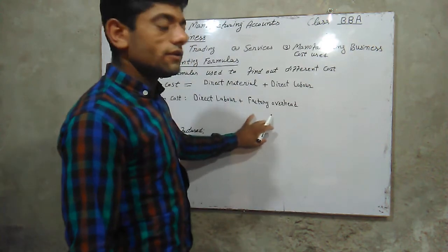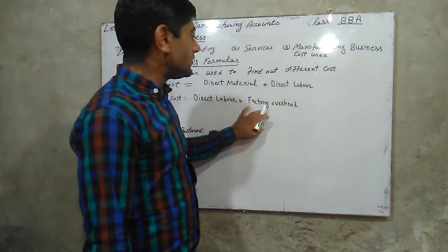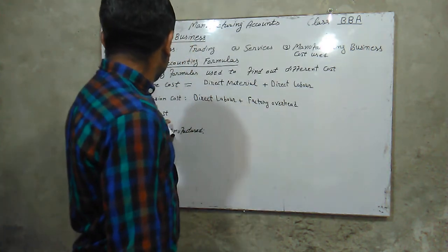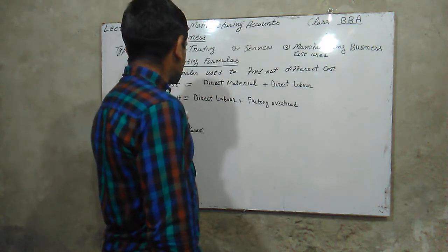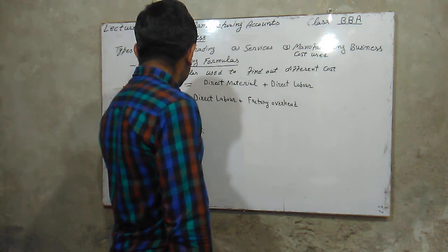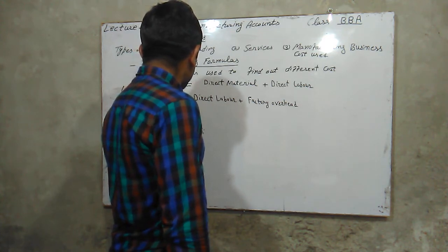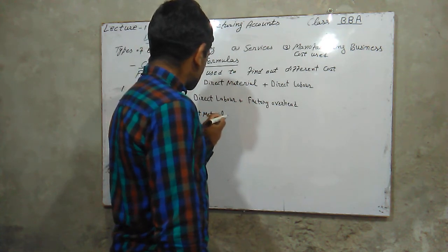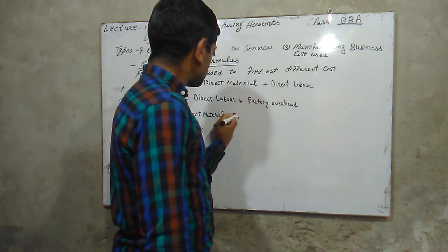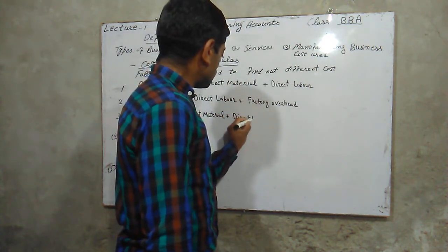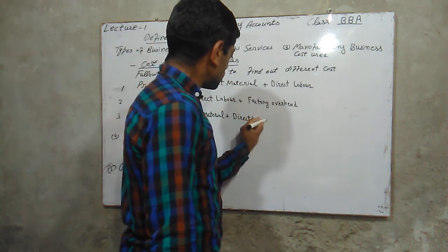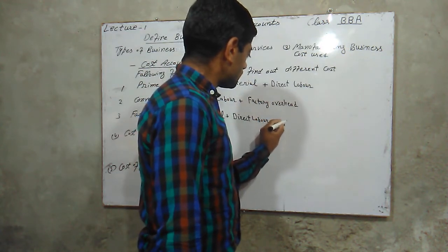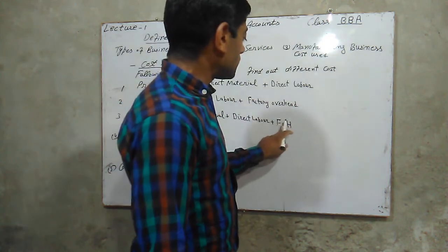Factory overhead includes indirect labor, indirect material, depreciation, heat, oil, etc. Factory cost equals direct material plus direct labor plus factory overhead. We write FOH — FOH means factory overhead.